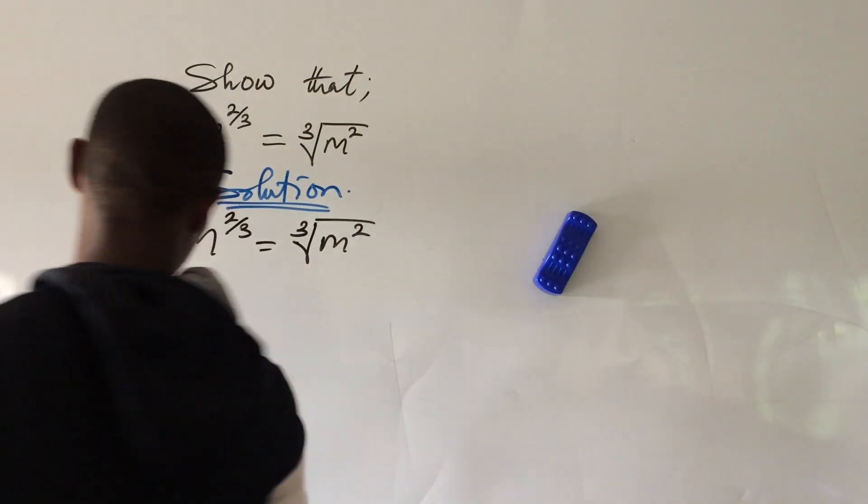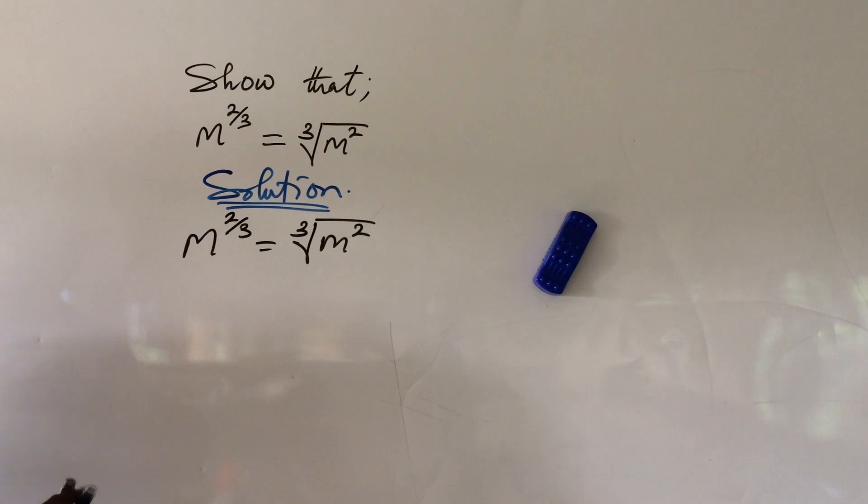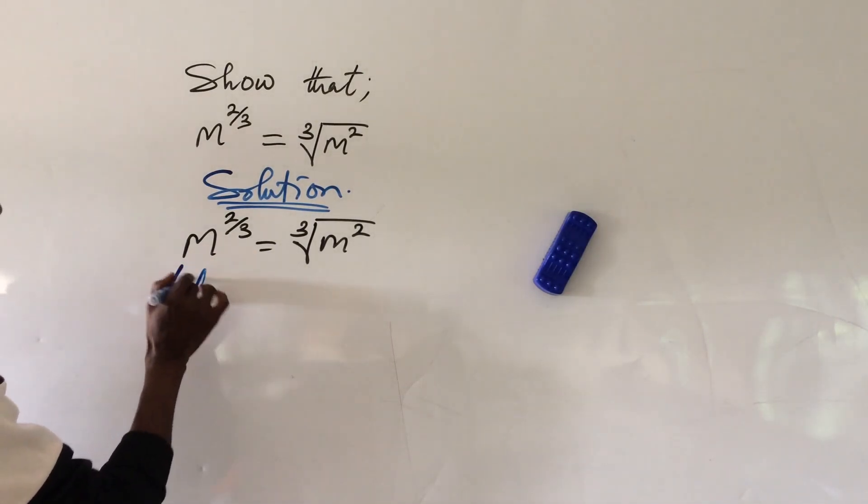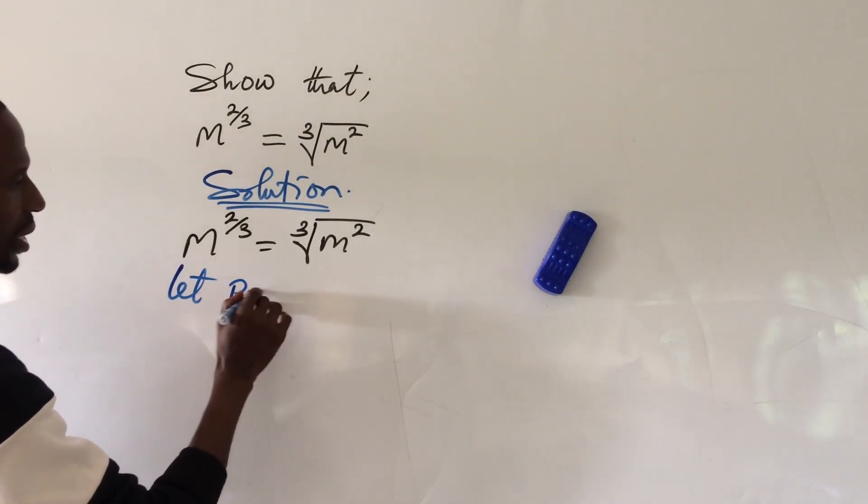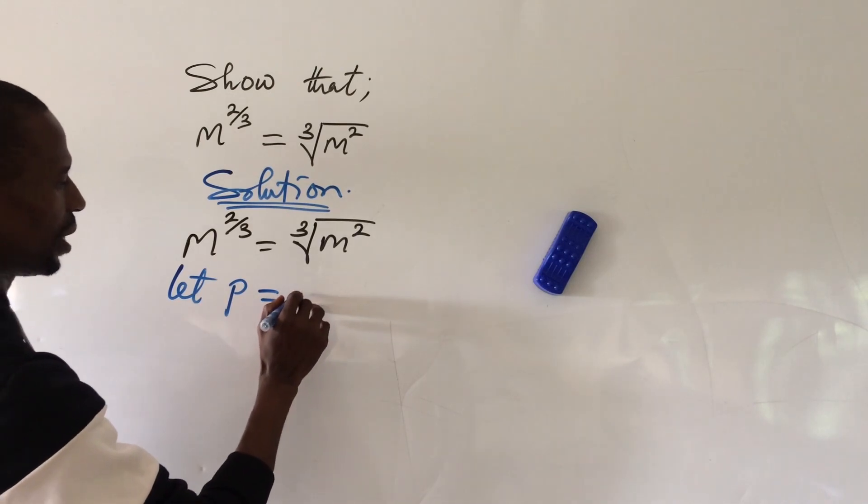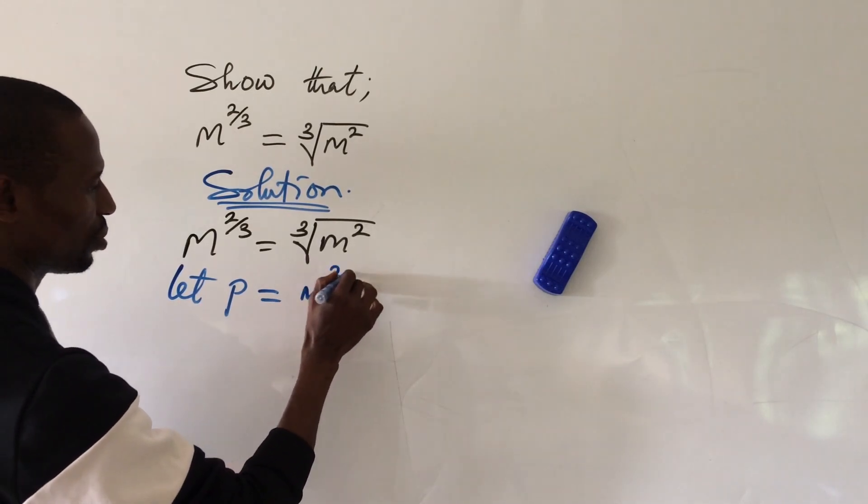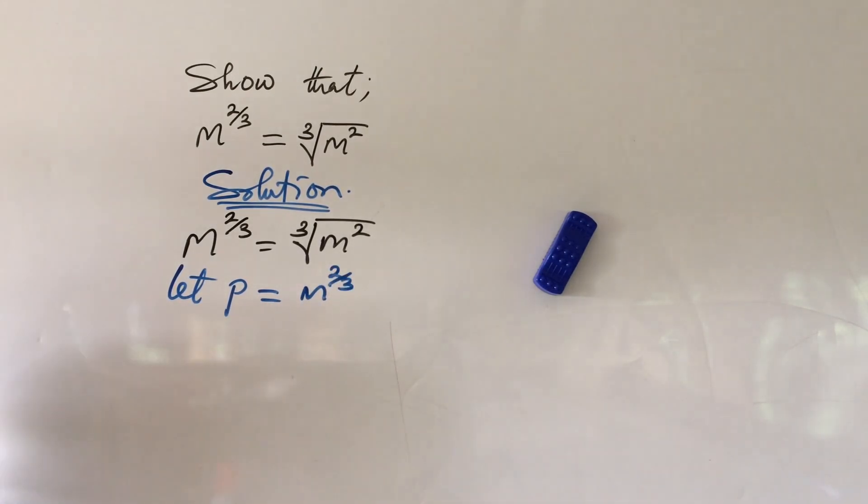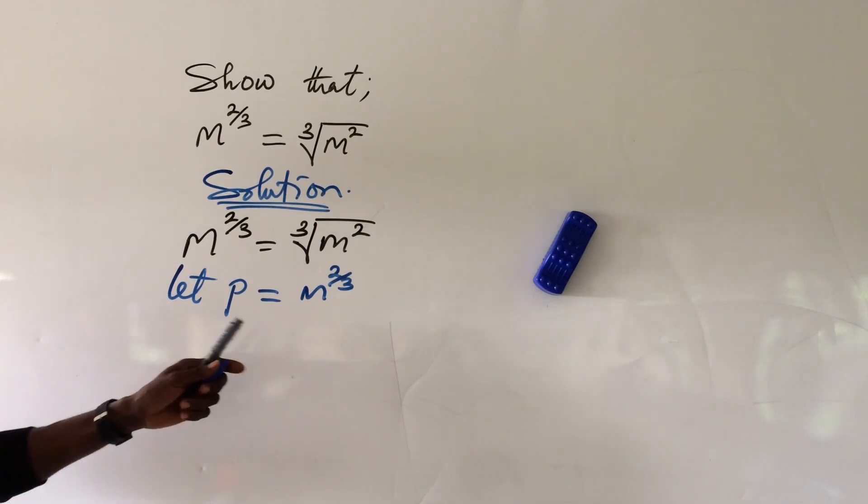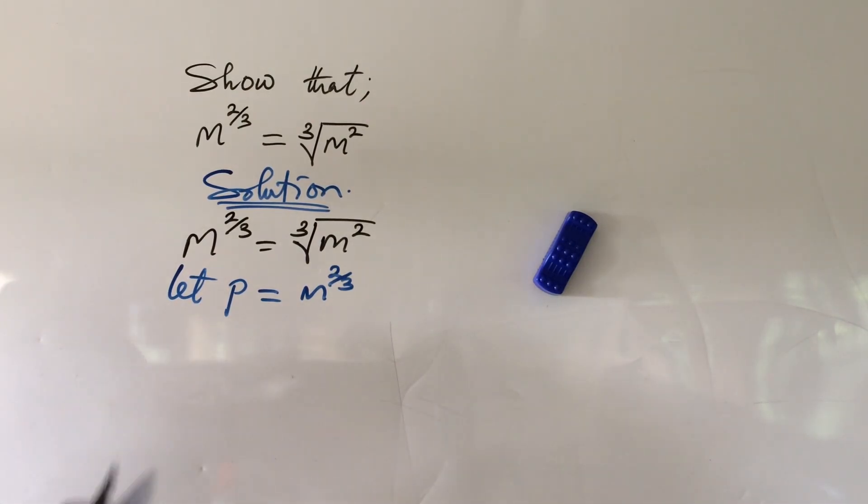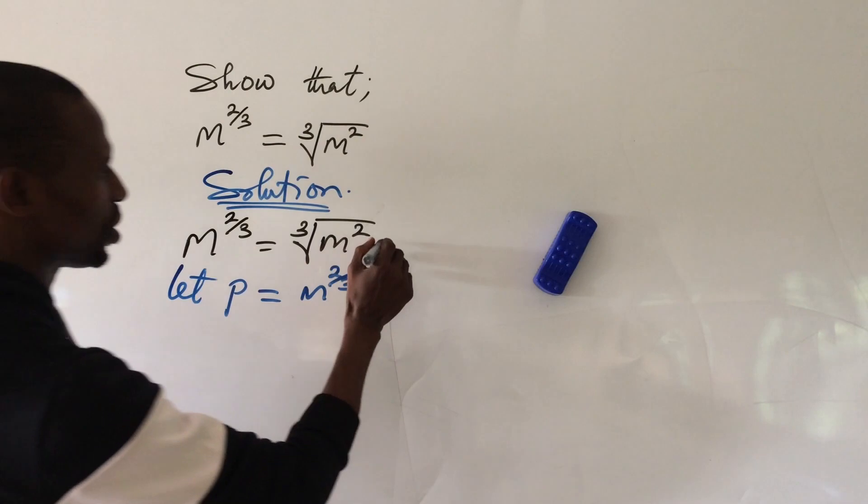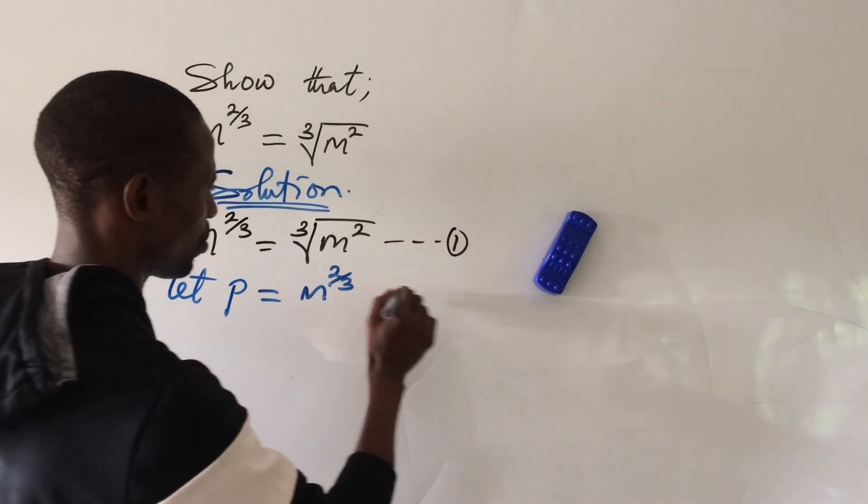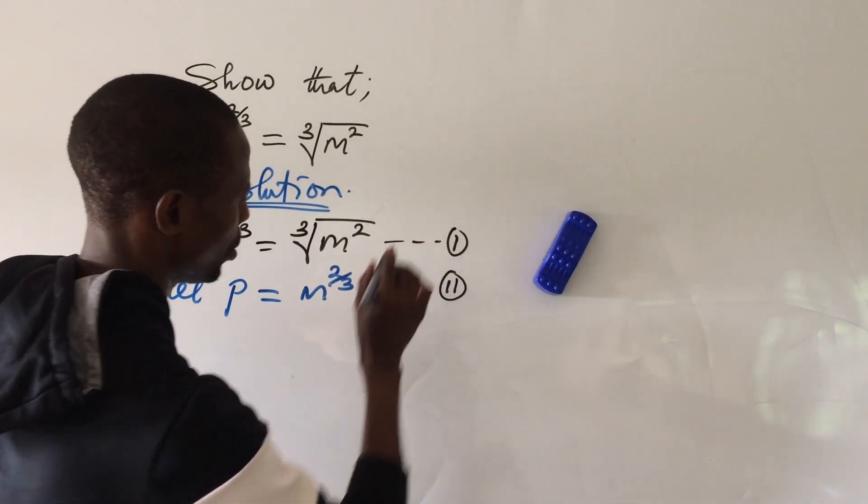So let's bring out, let's use p. So from here we'll say let p equal to m to the power of 2 all over 3. Okay. With this expression here now, let's look at this. Let's give this equation 1. This is equation 1. And let's give this equation 2.